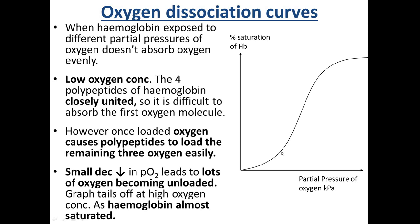Once the first oxygen molecule is bound, the polypeptide unwinds a little bit, which means the next three oxygens load a lot more easily. This is why the middle part of the curve is really steep — once the first one is bound, the polypeptide unwinds and it's easier to bind the next three molecules. At the other end of the curve, because the hemoglobin is almost saturated, it levels off again at high oxygen concentrations.